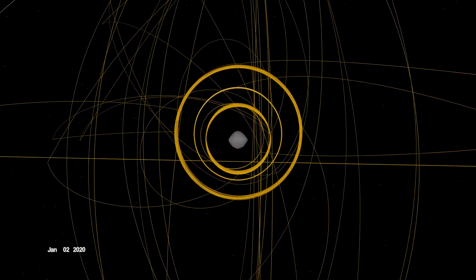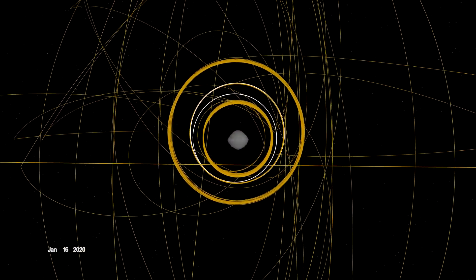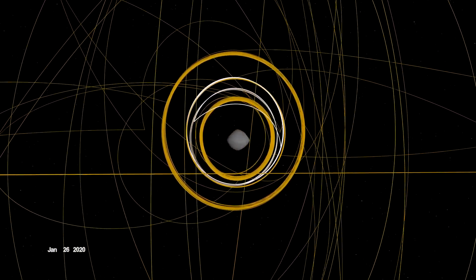OSIRIS-REx concluded its first year at Bennu back in orbit, circling the asteroid's terminator, or boundary, between day and night. Here, outside forces acting on the spacecraft are balanced, allowing it to orbit within the same plane over time.